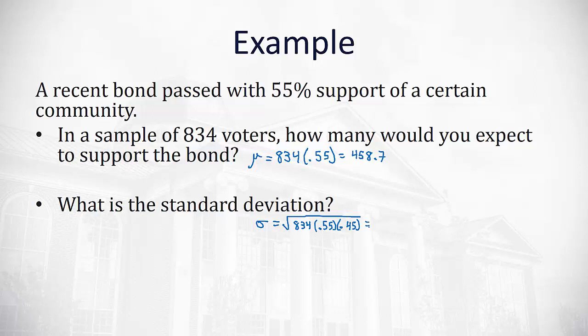When we do that on our calculator, 834 times 0.55 times 0.45, and then take the square root of our answer, we get 14.37 approximately.